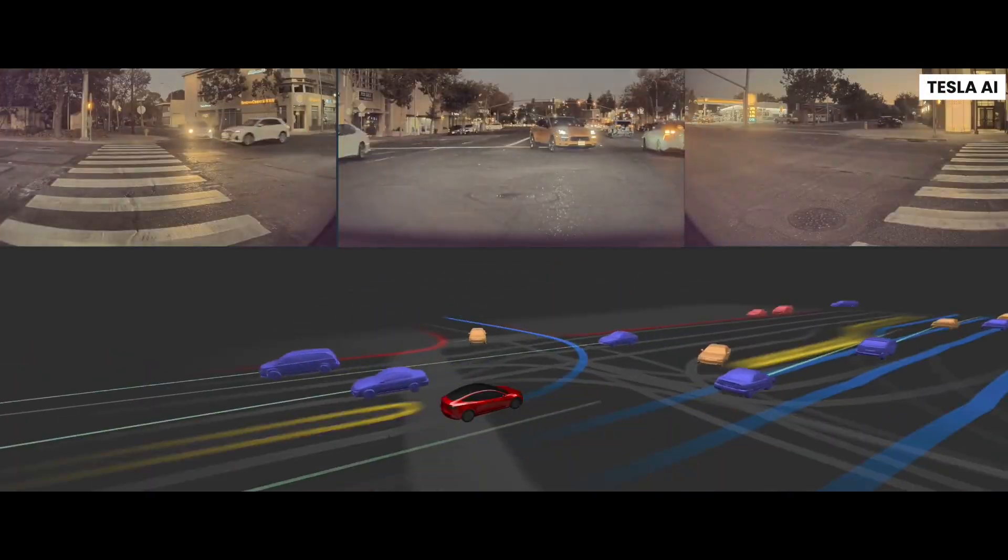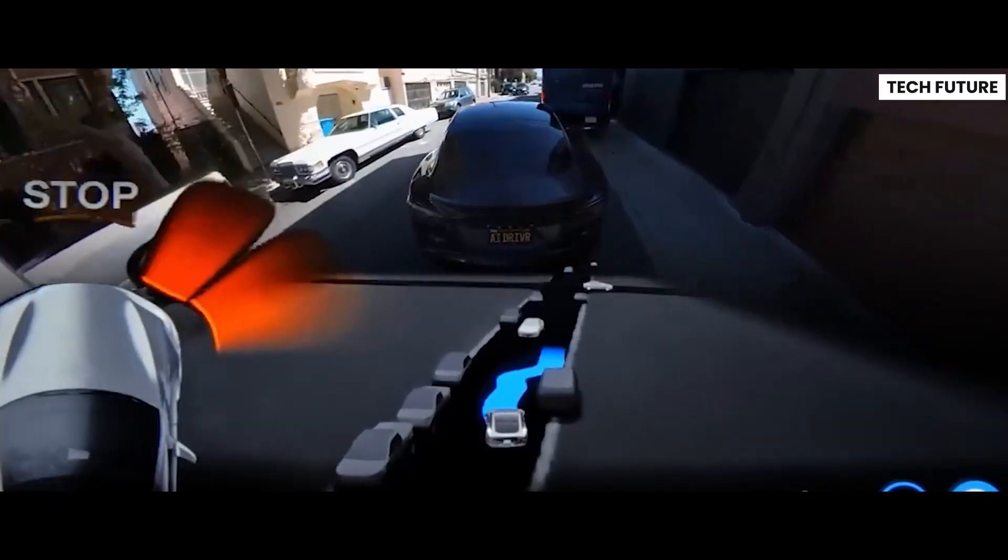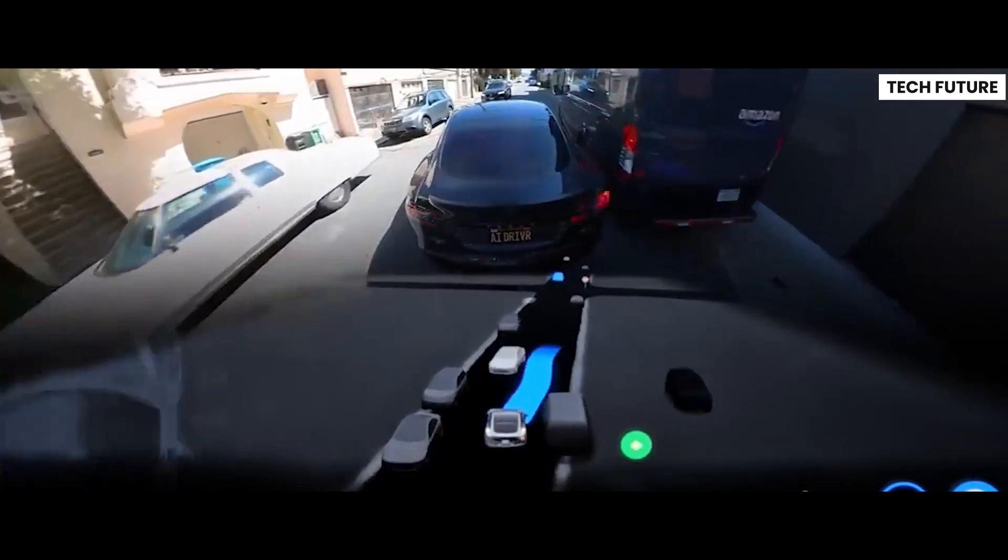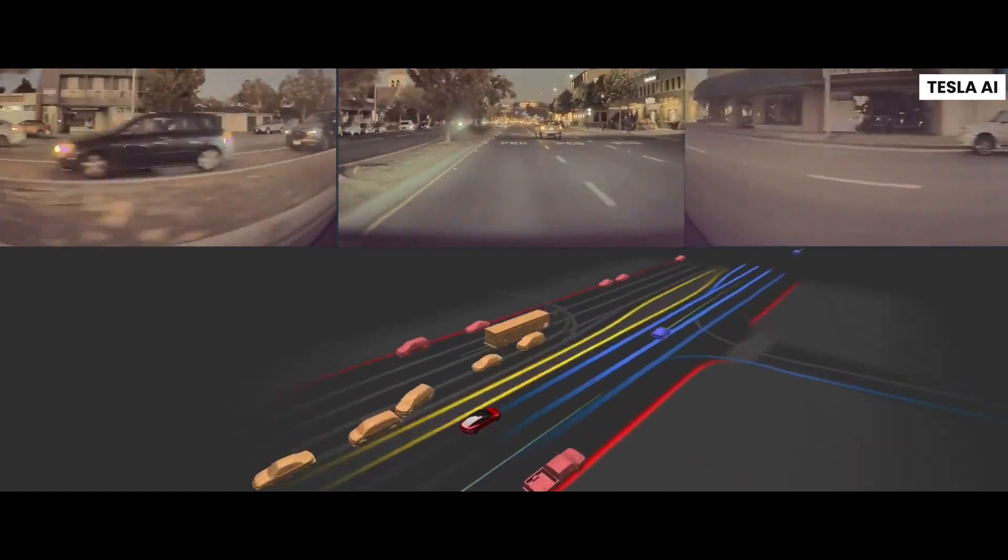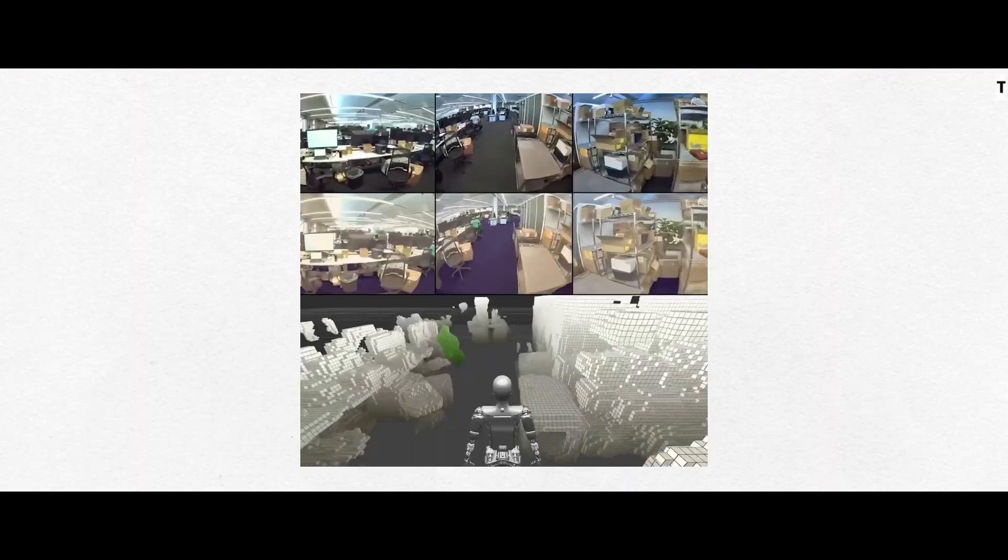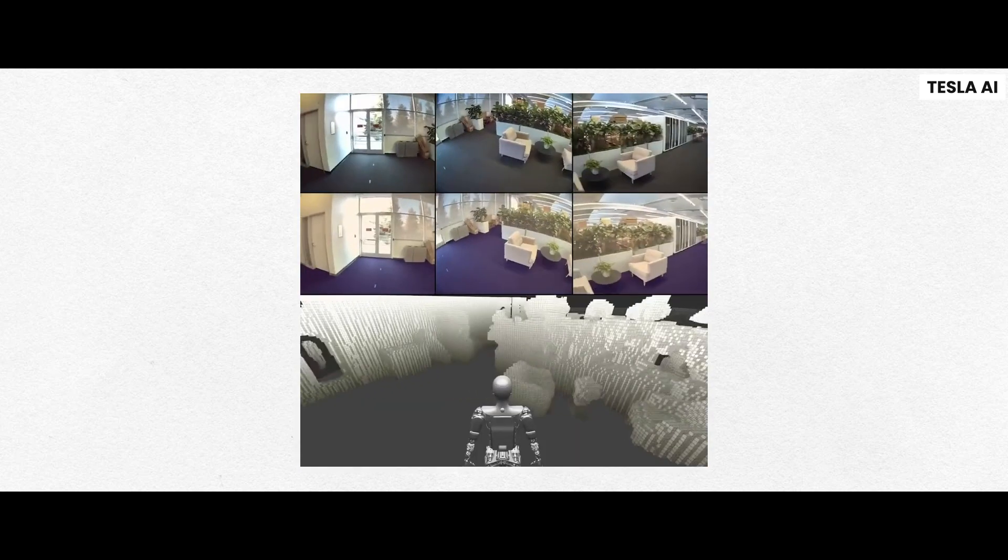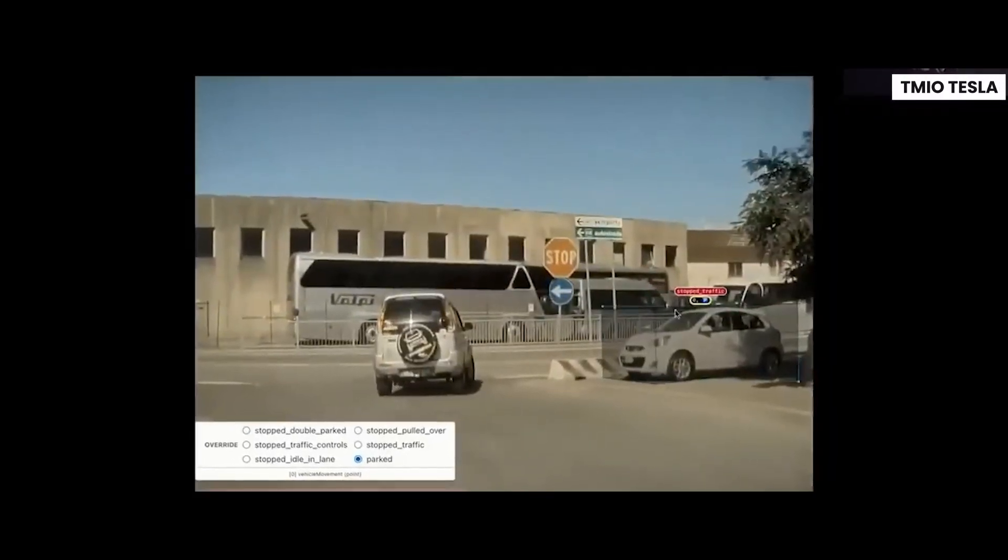Over the years, Tesla has been gathering tons of data from millions of vehicles out on the roads. And now, with Dojo, they can finally put that massive database to work. Dojo will crunch all that data and help Tesla analyze and learn from countless driving scenarios. It's like having a super smart brain that can process and understand all those real-world situations. This will definitely take Tesla's self-driving technology to new heights.